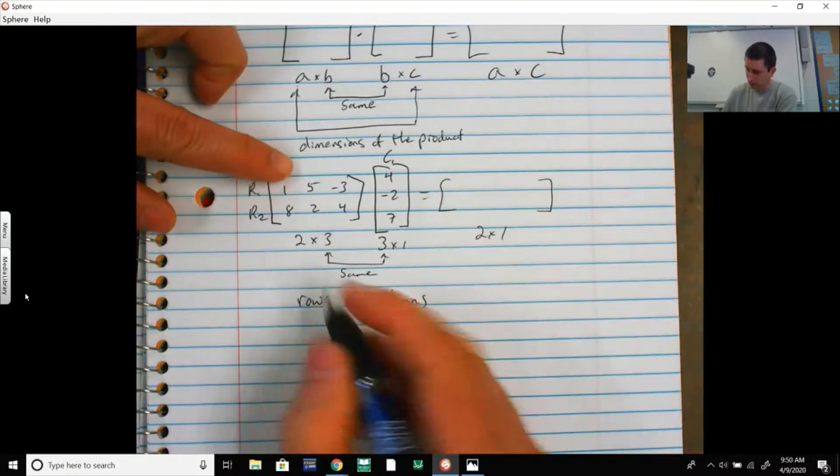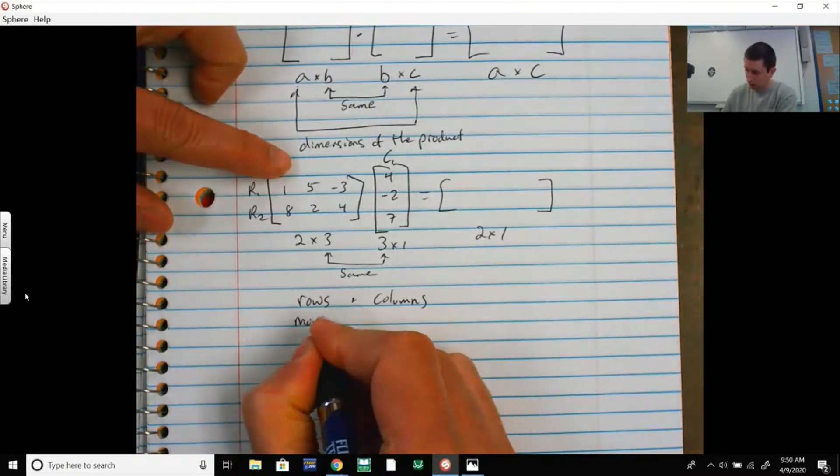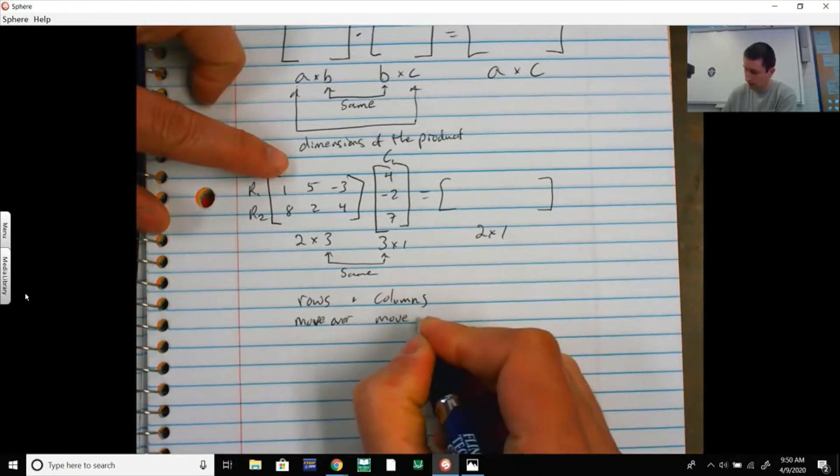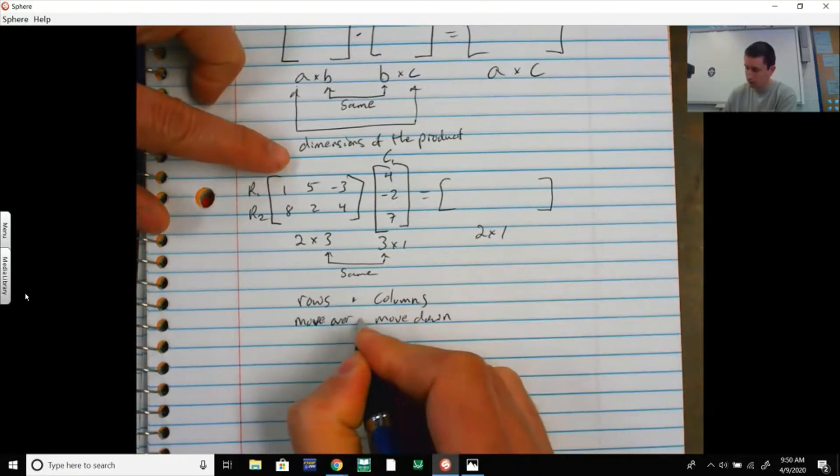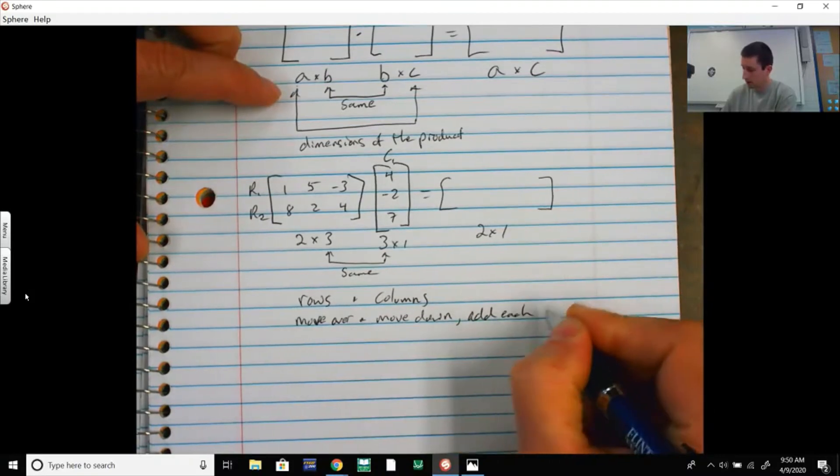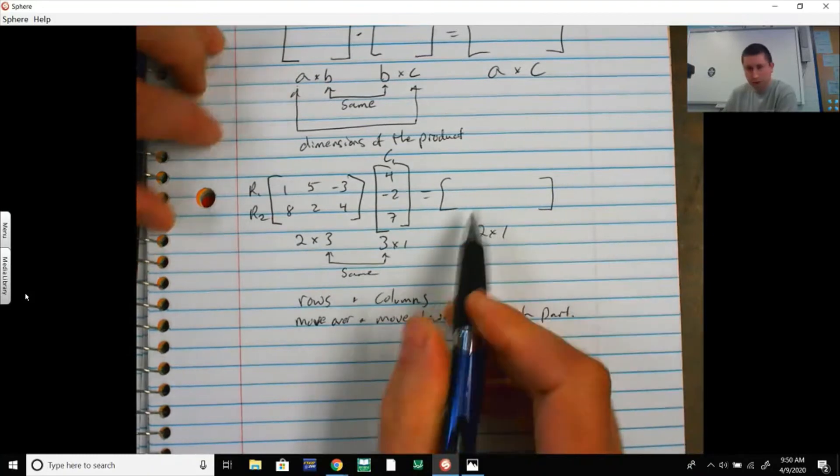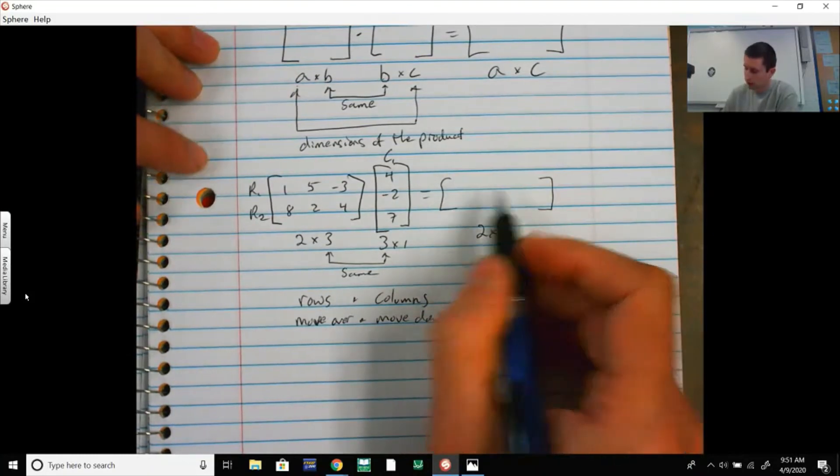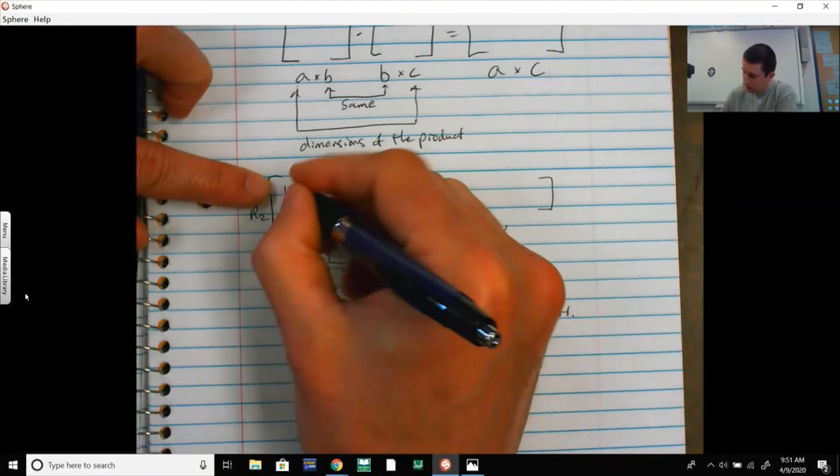Now I start looking at individual points. Whenever I move over in a row, I have to move down, and I'm going to multiply those, and then I add each part. Just for this first answer, 2 by 1, I'm only going to have two answers here. For this first answer, I have to take 1 times 4.